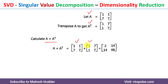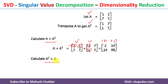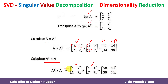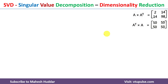For the matrix multiplication A×Aᵀ, rows are multiplied by columns. The first element: 1×1 + 1×1 = 2. The same row multiplied by the second column: 1×7 + 1×7 = 14. We complete the full matrix similarly. Then we also calculate Aᵀ×A: that row multiplied by the first column gives 50, and multiplied by the second column gives 50 as well.